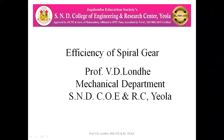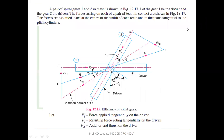Today we are going to see the expression for the efficiency of the spiral gear. Spiral gear is nothing but the helical gear, but in helical gear the teeth have a straight line shape while in spiral gear they have a smooth curvature. So the noise produced by the spiral gear will be less as compared to the helical gear. In the diagram shown here, this is a pair of spiral gears one and two.